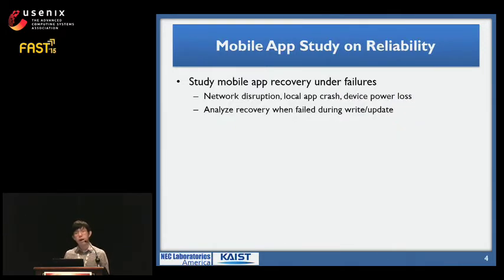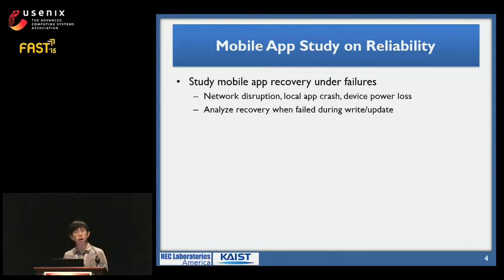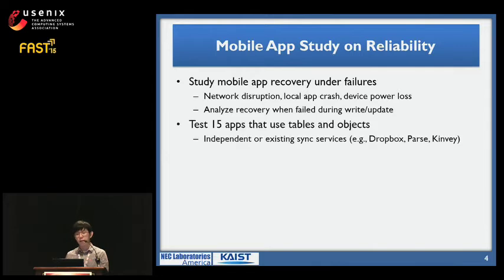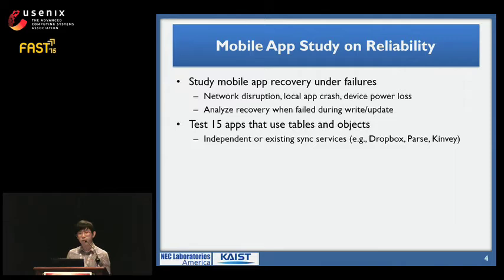Let's see how current mobile apps provide reliability at failures. We carried out a test to see how mobile apps recover after failures like network disruption, local app crash, and device power loss. We tested 15 apps that use tables and updates. Some apps implemented their own sync mechanism, while some used existing sync services like Dropbox, Parse, and Kimby.